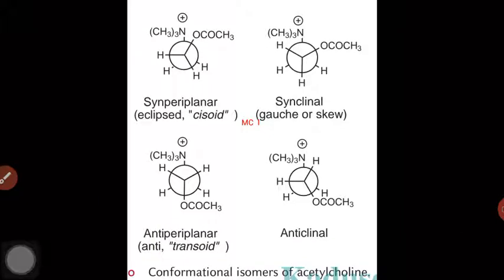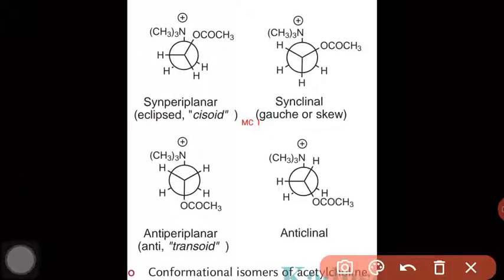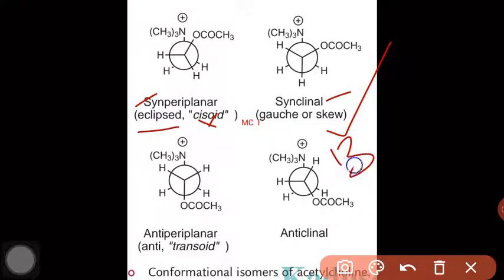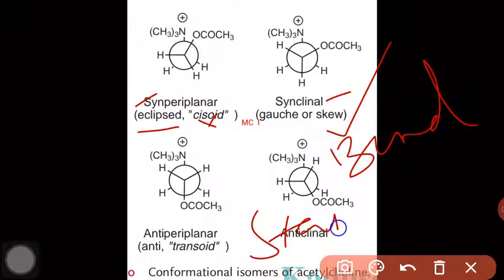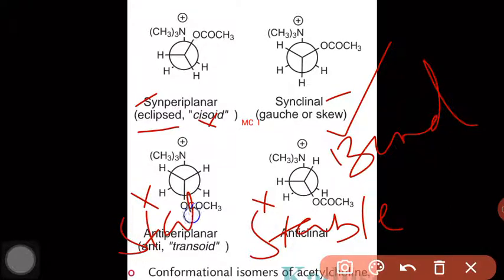This is another way of writing acetylcholine conformations. Synperiplanar is completely eclipsed — not needed. Synclinal is the preferred form for binding. The anticlinal form is stable but not needed. Antiperiplanar is stable but not that important for binding.